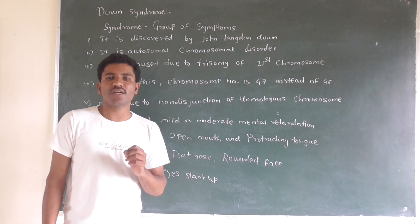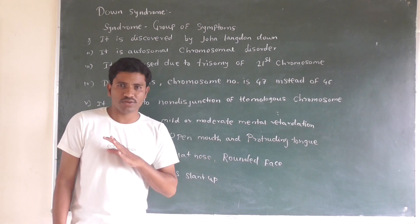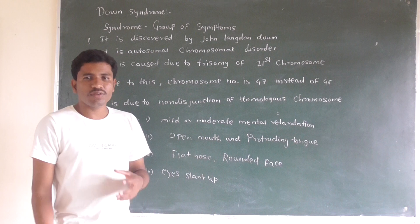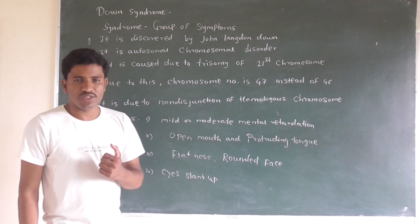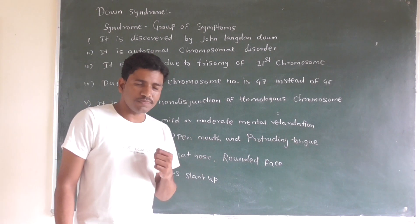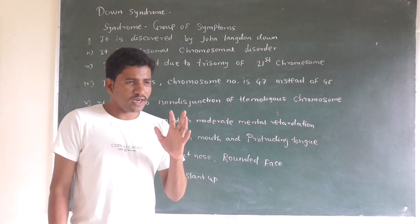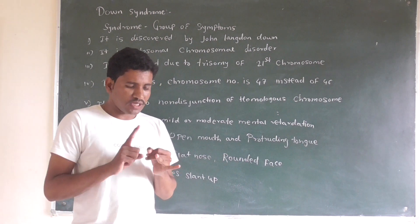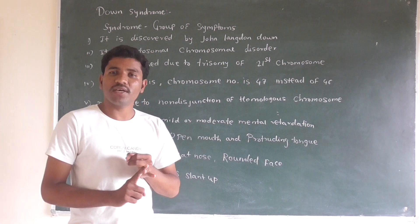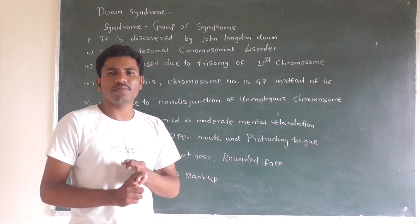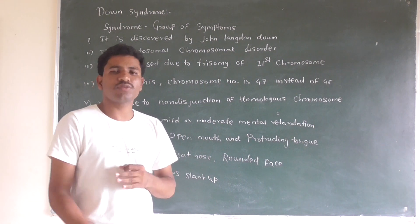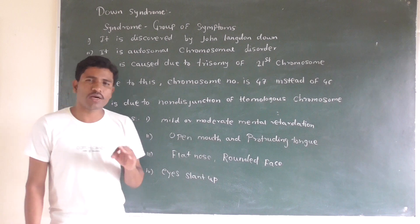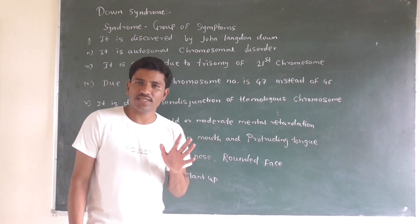The types of thalassemia are alpha and beta. Treatment includes massive blood transfusion to the patient. Symptoms include jaundice, anemia, and changes in the shape and size of red blood cells. That is a review of thalassemia from our previous discussion.